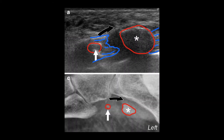This axial image shows a couple of things. First, you can see the os peroneum, which is asterisked on the right side of the image in the larger red circle. Then you see an avulsion fracture, which is the smaller red circle on the left side of the image.